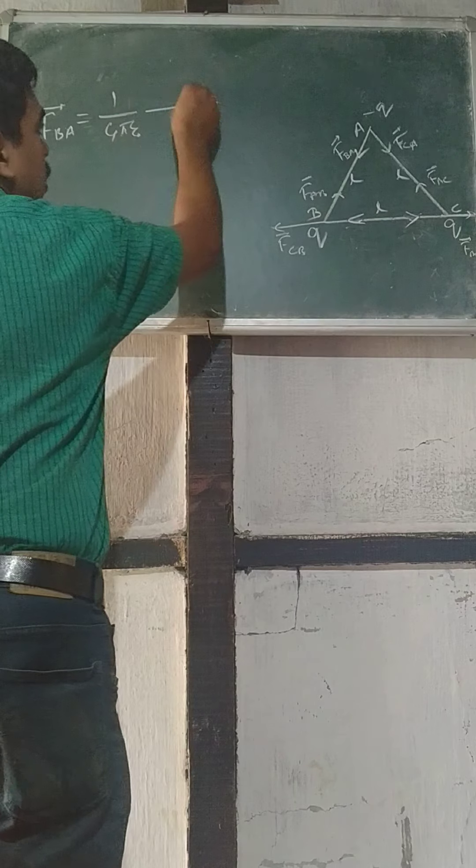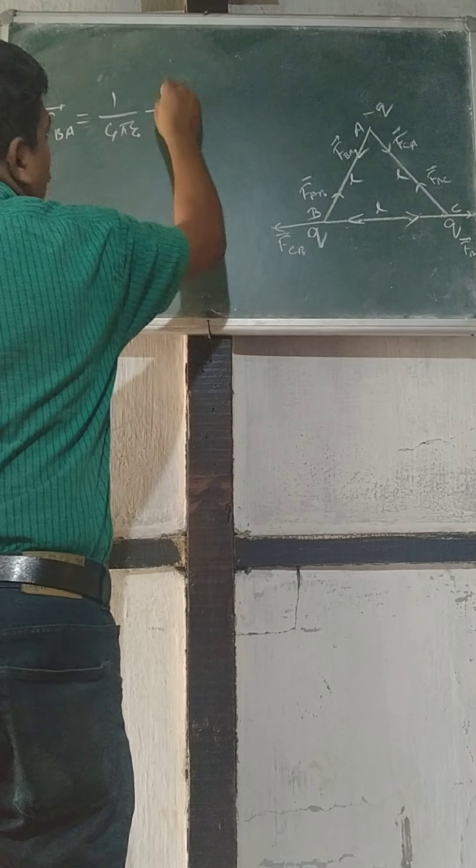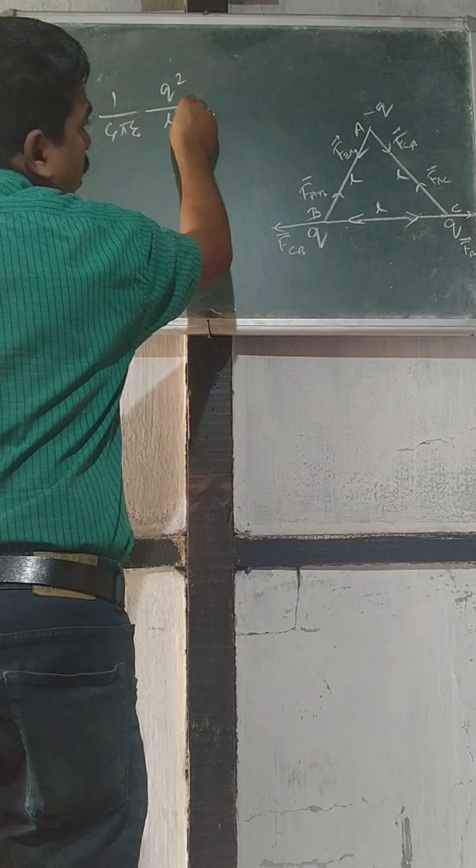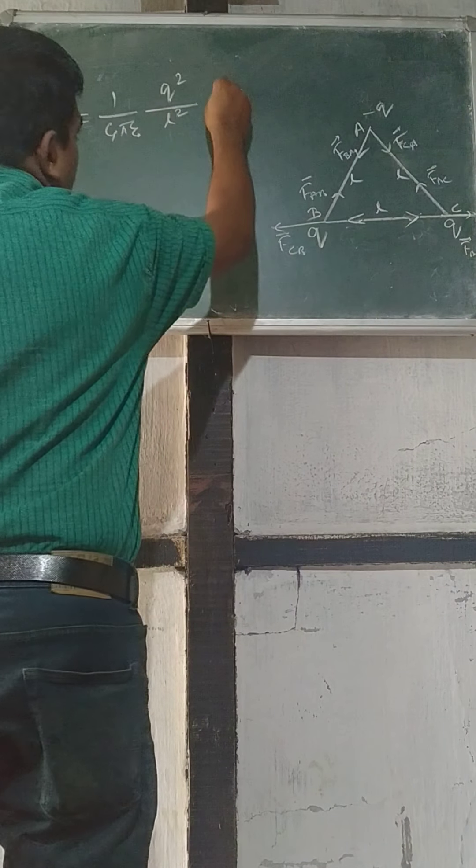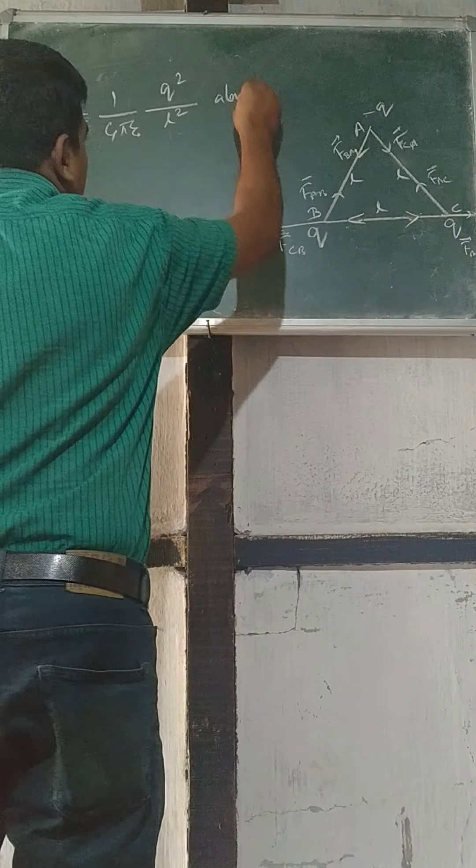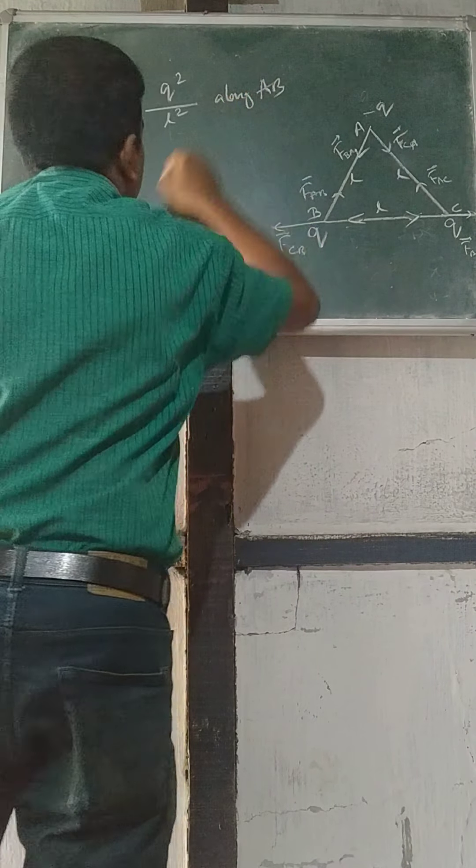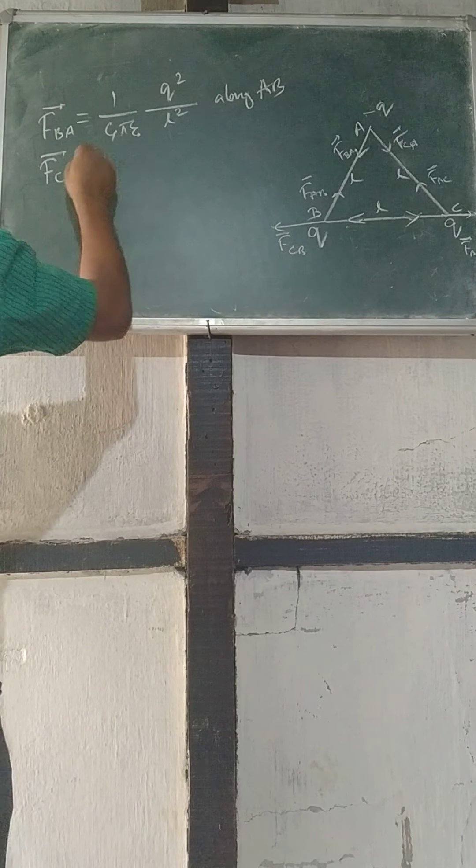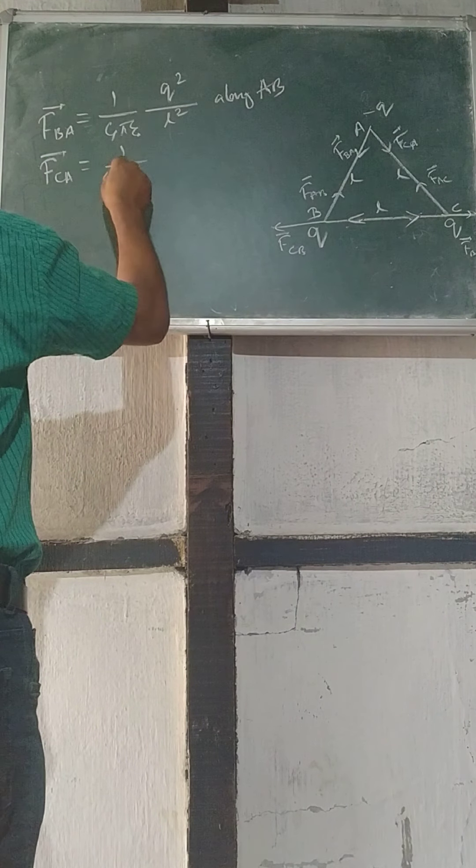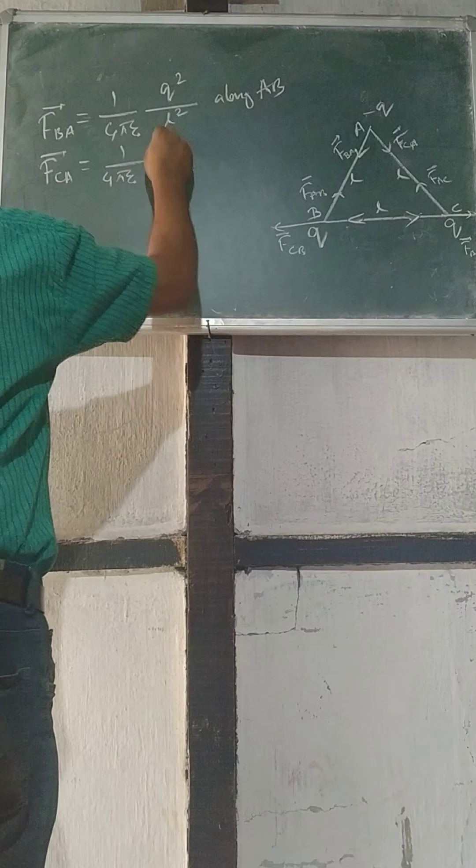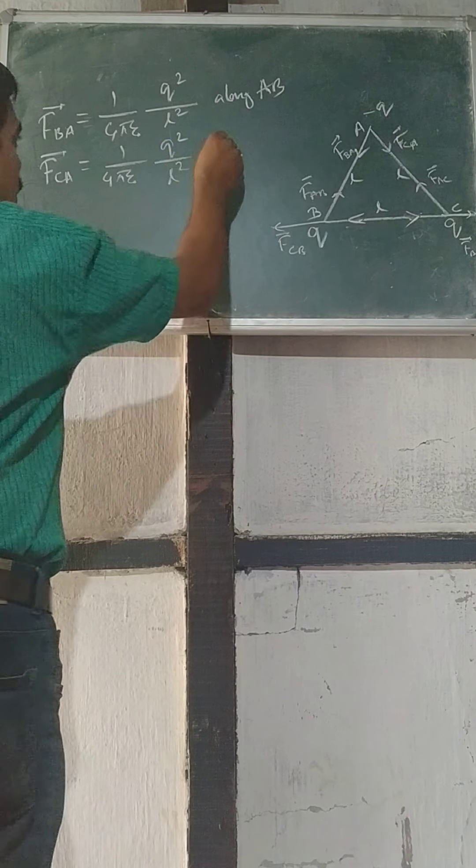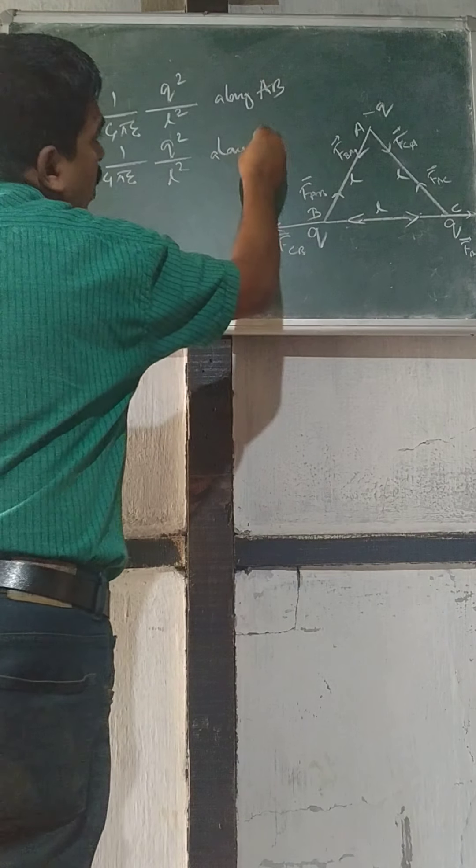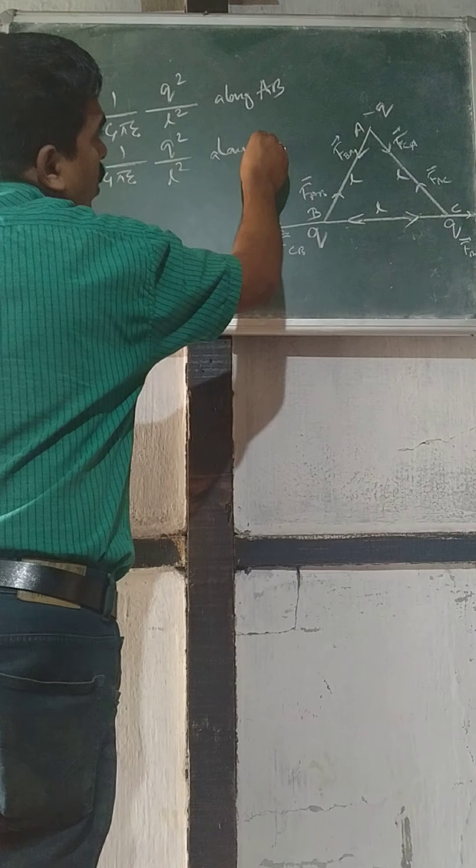F equals 1 by 4 pi epsilon naught Q square by L square in direction of AB, along AB. FCA equals 1 by 4 pi epsilon naught Q square by L square along CA, here means same along AC.